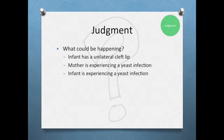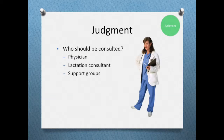The next step in our clinical decision-making framework is judgment. After organizing my observations and history, I believe that the mother and infant are experiencing yeast infections and the infant also has a unilateral cleft lip. Signs and symptoms of the yeast infection of the mother include itchy and shiny nipples as well as a vaginal yeast infection. Signs and symptoms of the infant include white coating of tongue and poor feeding. The mother is already aware of the cleft lip. I would consult a physician to organize care for the surgery for the cleft lip as well as prescribe treatment of the yeast infections for the entire family. I would also like to consult a lactation consultant to follow up with the mother in terms of the breastfeeding relationship. Finally, I would suggest support groups to the family involving other parents' experiences with an infant who has a cleft lip.